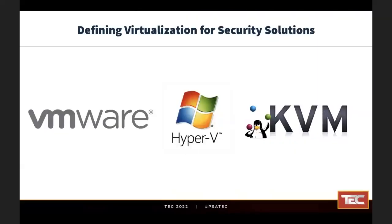If you take a virtualized approach, there are some very elegant solutions that will actually solve that problem for you. While we focus on VMware, you can certainly do this with Hyper-V, KVM, or Nutanix — there are numerous solutions that allow you to create a highly available scenario where if a single server or entity fails, not only do you not stop recording, but you still have access to all the data that was recorded on that particular solution.